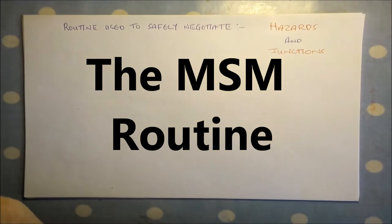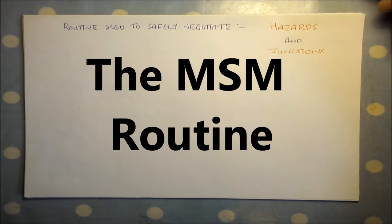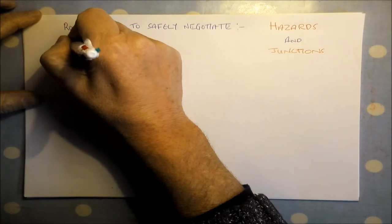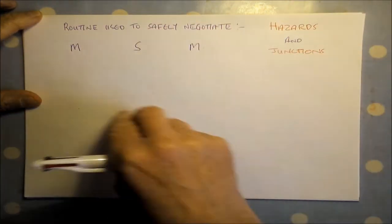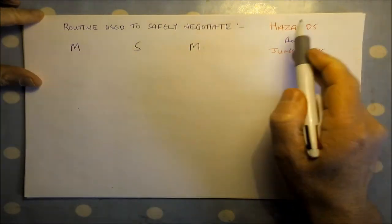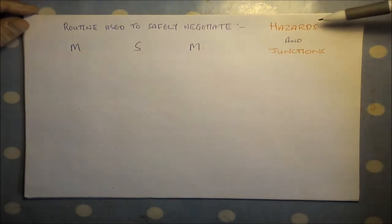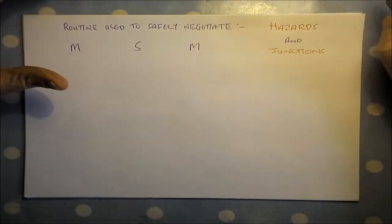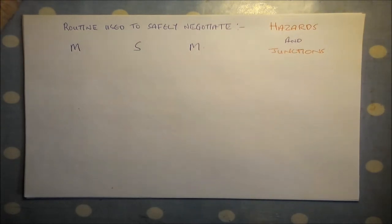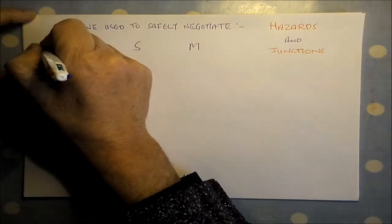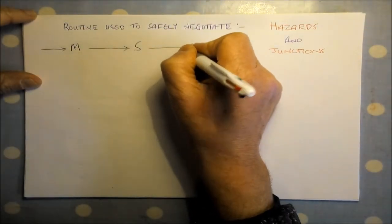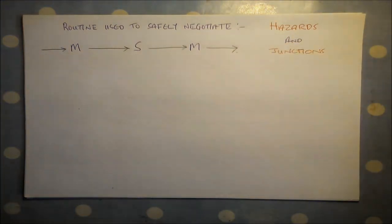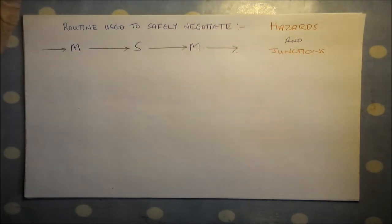Hi, I'm Angus the singing driving instructor, and you're very welcome to this briefing on the MSM routine — the mirrors, signal, maneuver routine. The MSM routine is the routine we use to safely negotiate hazards and junctions. Anything we need to deal with when driving falls under the umbrella of either a hazard or a junction, and this routine allows us to work through and deal with it. It's best seen as a thread that runs through your driving process.